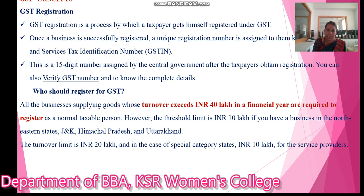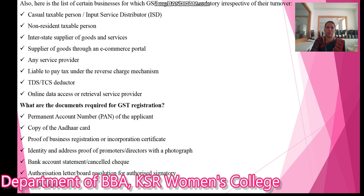For example, Jammu and Kashmir, Himachal Pradesh, and Uttarakhand. Also, here is the list of certain businesses for which GST registration is mandatory: casual taxable person, non-resident taxable person, interstate suppliers of goods and services, any service provider liable to pay tax under the reverse charge mechanism, TDS or TCS deductor, and online data access or retrieval service provider.